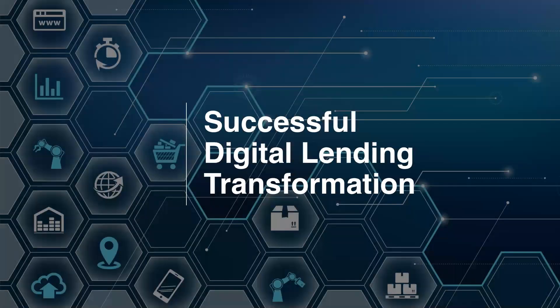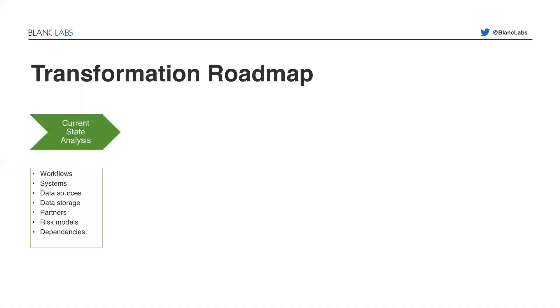Now the question might be: I understand the benefits of going digital — I know it empowers me and can be a competitive edge — but what are the steps to go through this digital transformation? We have a framework at Blanc Labs that I can describe at a higher level in terms of this transformation roadmap. We always start with the current state analysis, going through the identification of workflows, all the systems already in use within the organization, all the data sources, data storage and how it's being done, partners, all the risk models and dependencies. All of them come together to give you a current state analysis.